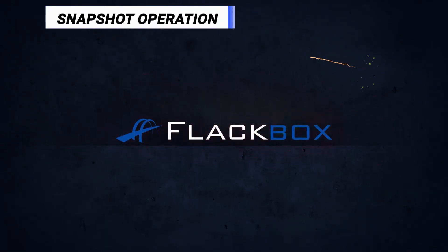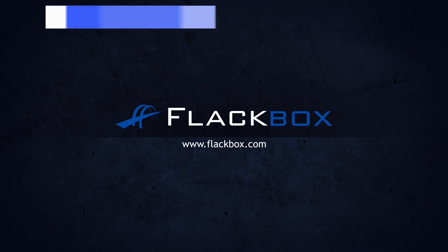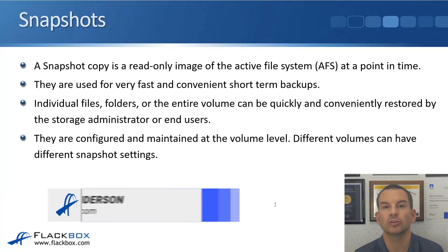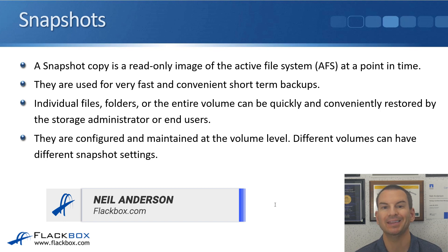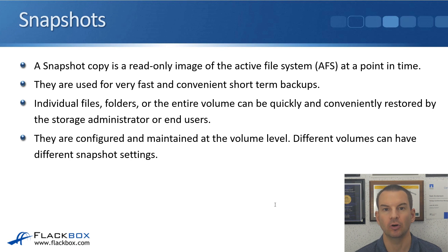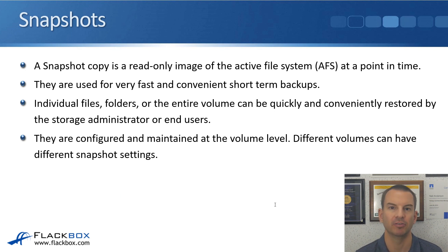In this lecture, you'll learn what ONTAP snapshots are and how they work. A snapshot copy is a read-only, point-in-time image of the active file system. Throughout this section, I'll call the active file system the AFS. The active file system is whatever files and folders — the directory structure of a volume right now.